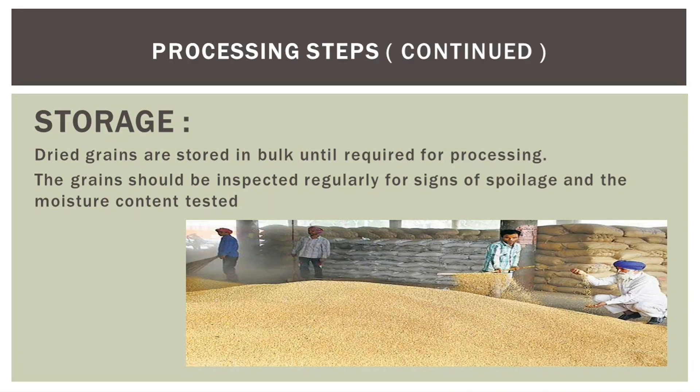Finally, we have storage. Dried grains are stored in bulk until required for processing. The grains should be inspected regularly for signs of spoilage and the moisture content tested. You can refer to this image for further clarification on how storage looks.